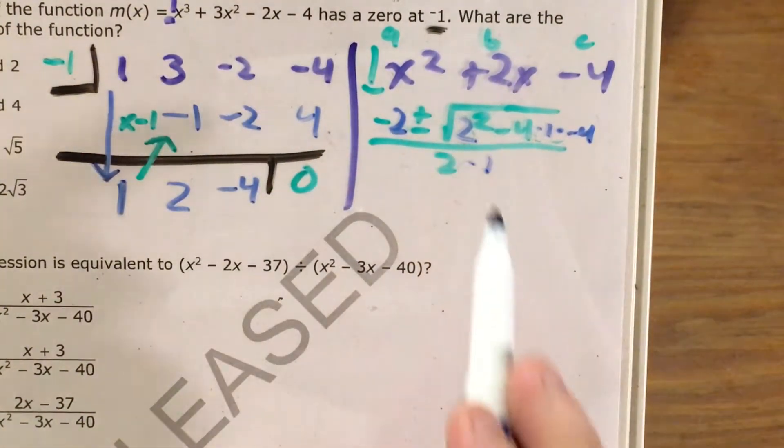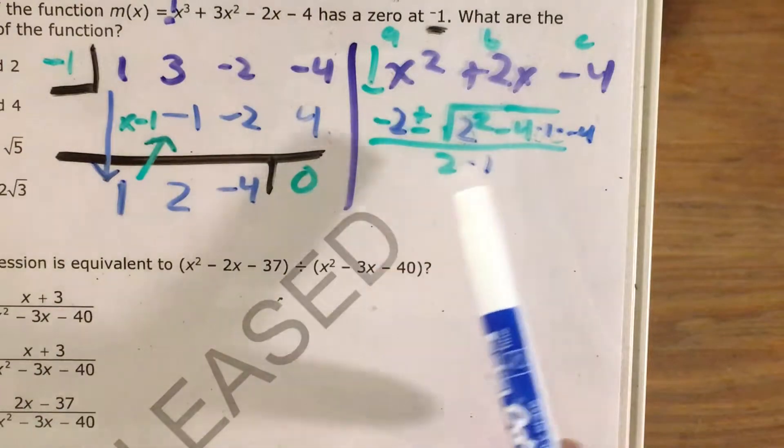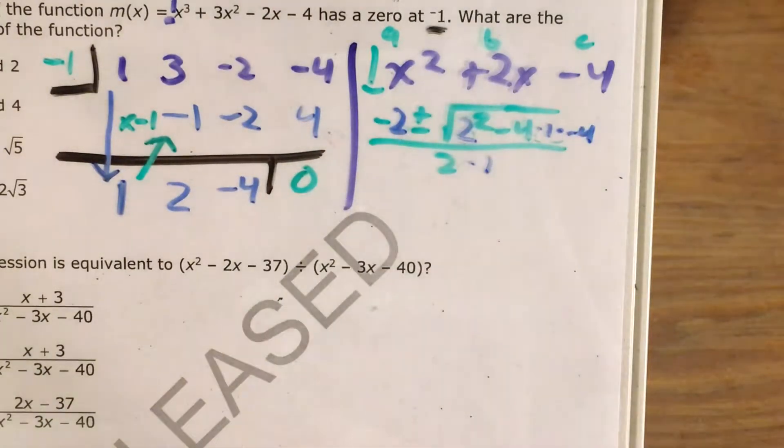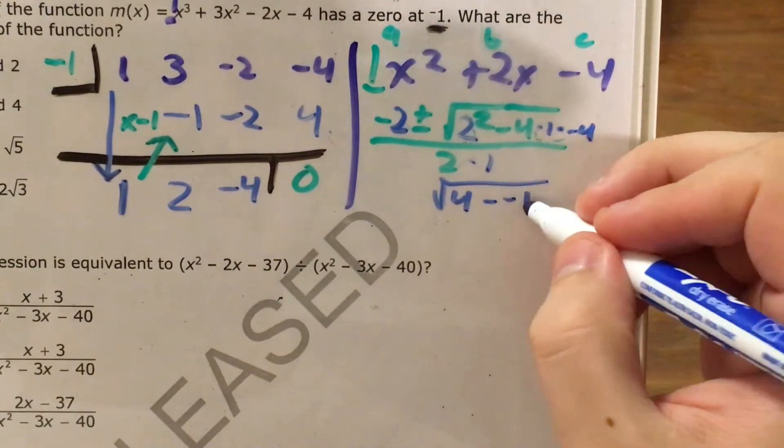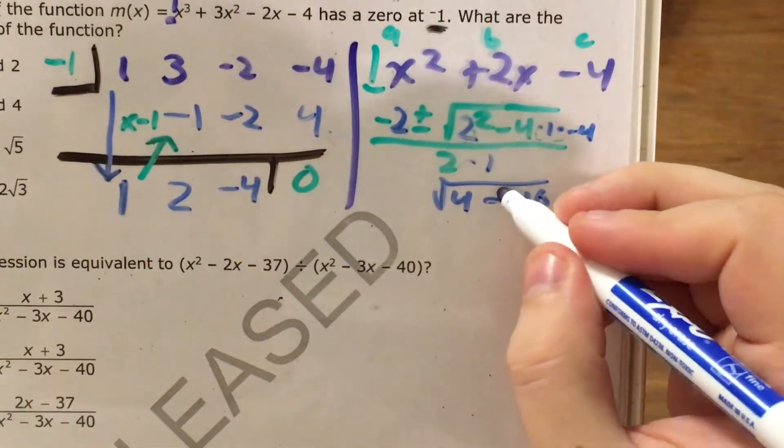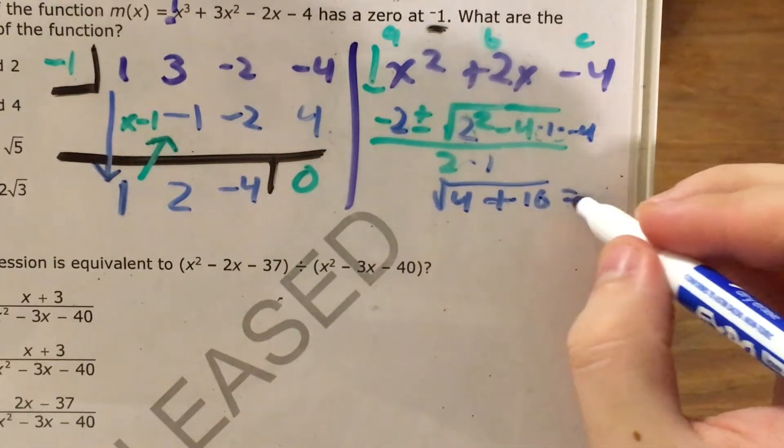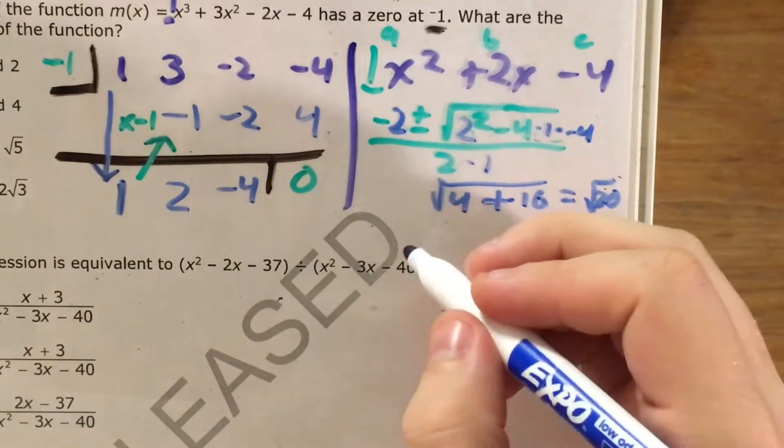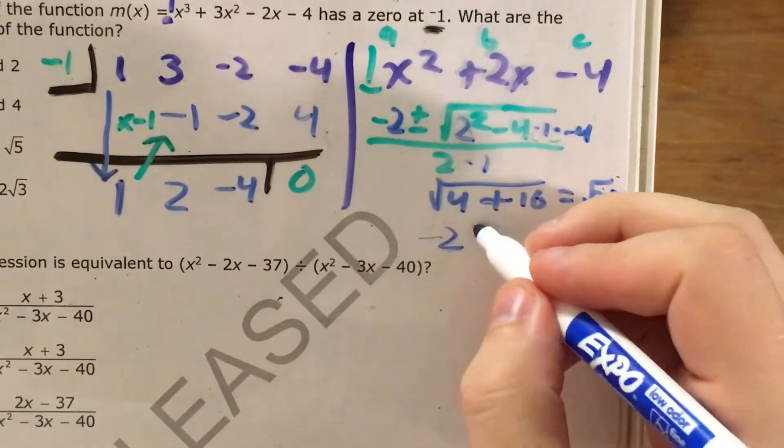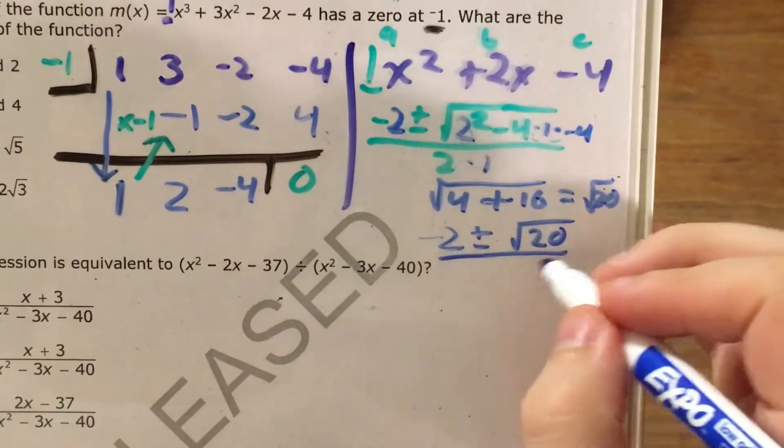First big thing I want to do is figure out the stuff inside my square root. So this is going to be two squared is four. Four times one times negative four is negative 16. Two negatives make a positive, and this gets me the square root of four plus 16, which is the square root of 20.